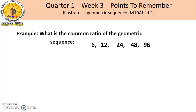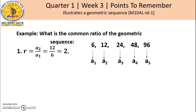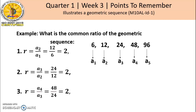Example: What is the common ratio of the geometric sequence 6, 12, 24, 48, 96? Here, 6 is A sub 1, 12 is A sub 2, 24 is A sub 3, 48 is A sub 4, and 96 is A sub 5. To find the common ratio, divide A sub 2 by A sub 1: 12 divided by 6 equals 2. A sub 3 divided by A sub 2: 24 divided by 12 equals 2. A sub 4 divided by A sub 3: 48 divided by 24 equals 2. So the common ratio of the geometric sequence 6, 12, 24, 48, 96 is 2.